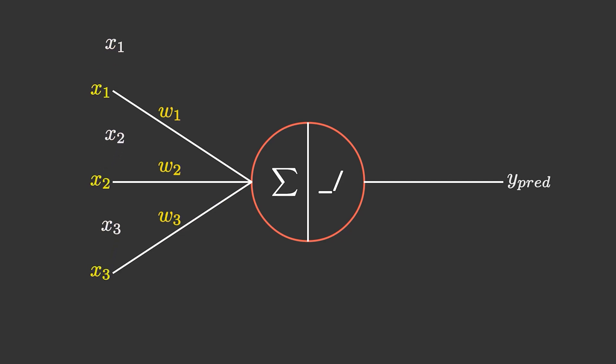In the previous video we discussed how the neuron calculates the y predicted by the summation operation, but we didn't discuss the right side of this neuron, which is the activation operation. If you haven't seen that video, I recommend you to see that first so you can connect with this video.